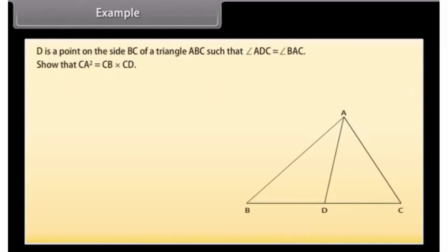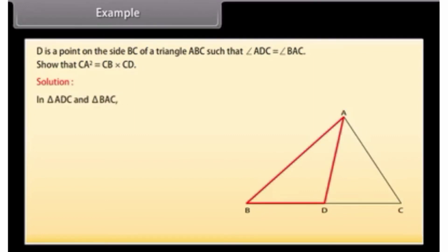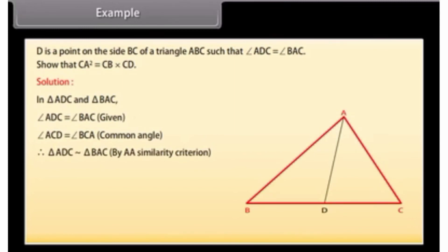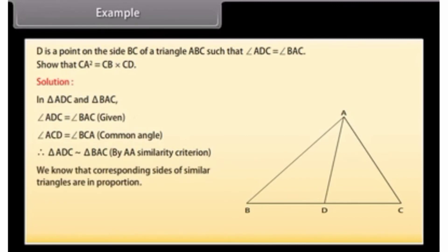D is a point on side BC of triangle ABC such that angle ADC = angle BAC. Show that CA² = CB × CD. In triangles ADC and BAC: angle ADC = angle BAC (given) and angle ACD = angle BCA (common). Therefore, triangle ADC is similar to triangle BAC by AA similarity criterion. Since corresponding sides of similar triangles are in proportion: CA/CB = CD/CA, which implies CA² = CB × CD.